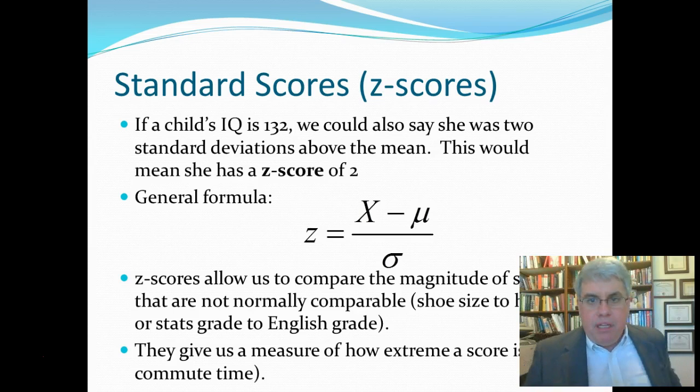Now, the general formula for calculating Z-scores is Z equals X. That's our raw score. In this situation, it would be the child's IQ of 132. And if we had lots of children in the class, we'd have a separate raw score for each child.